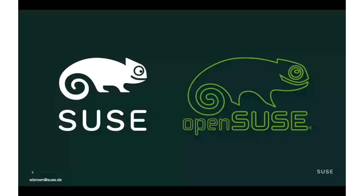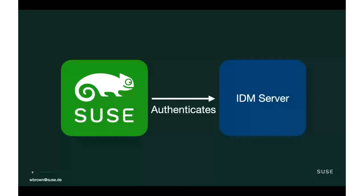Within SUSE and our corporate offerings, but also our open source offerings through OpenSUSE, we offer a number of different things when it comes to identity management. One way to look at this is that SUSE is the client of an authentication system — this could be SUSE Linux Enterprise or an OpenSUSE machine — and we rely on an external service that is running our software to make identity and authorization decisions.